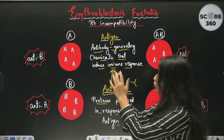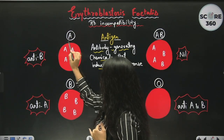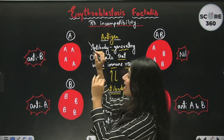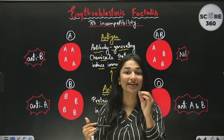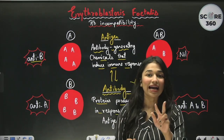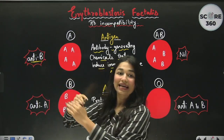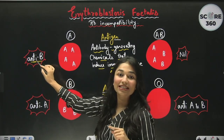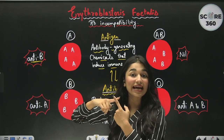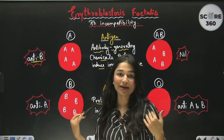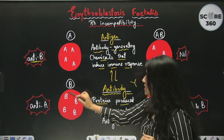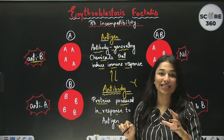Now talking about the blood grouping system: if antigen A is present on the surface of my RBCs, then my blood group will be A. In that case, the antibody present in my blood will be anti-B — meaning it is against the B antigen. Anti-A is not present because if anti-A were present, it would destroy my own RBCs. So anti-B is present when blood group is A. Similarly, if antigen B is on the surface, the blood group is B and the antibody present will be anti-A.